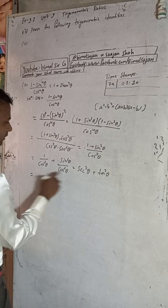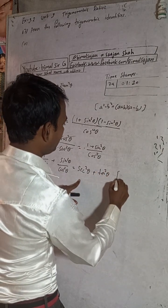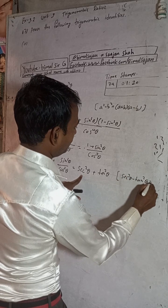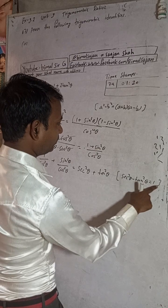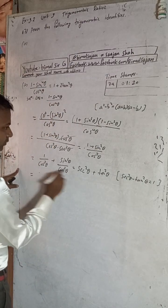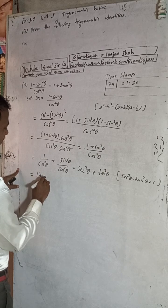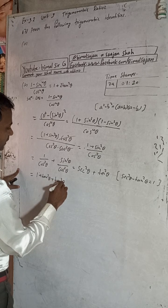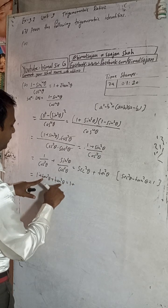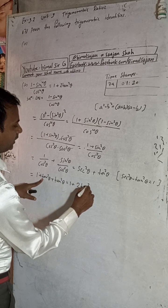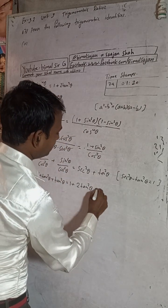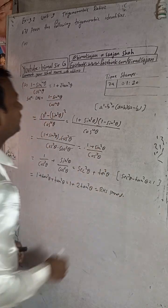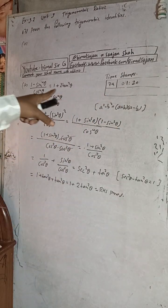We know the formula: sec²θ minus tan²θ equals 1, so sec²θ equals 1 plus tan²θ. Substituting: (1 plus tan²θ) plus tan²θ — this gives 1 plus 2 tan²θ, which equals RHS. Proof complete. The time stamp for 7a is 1 minute 20 seconds.